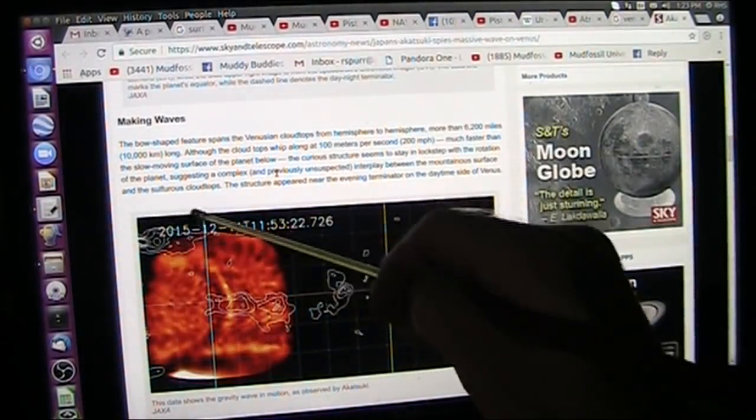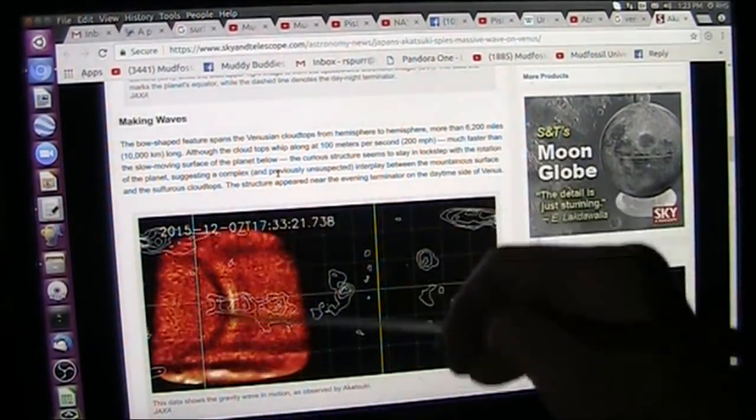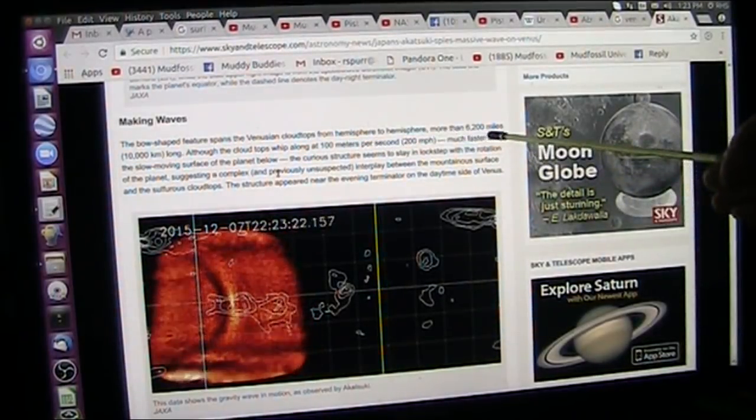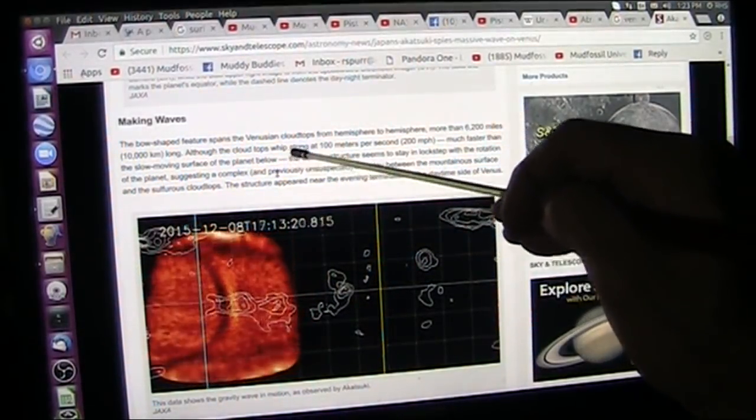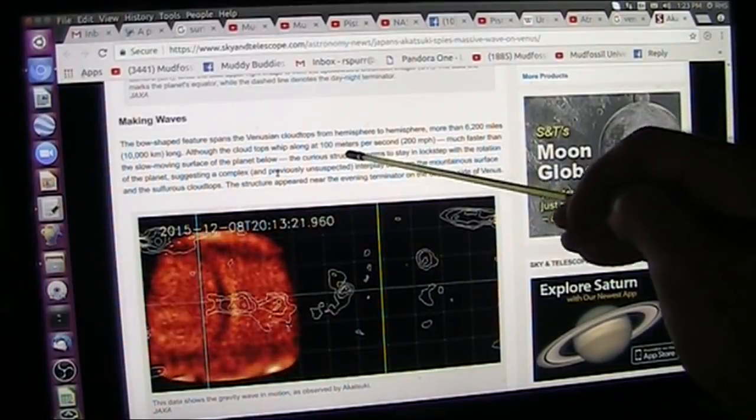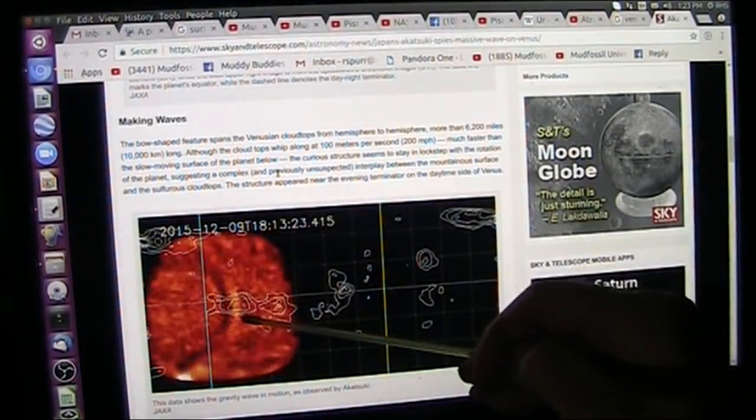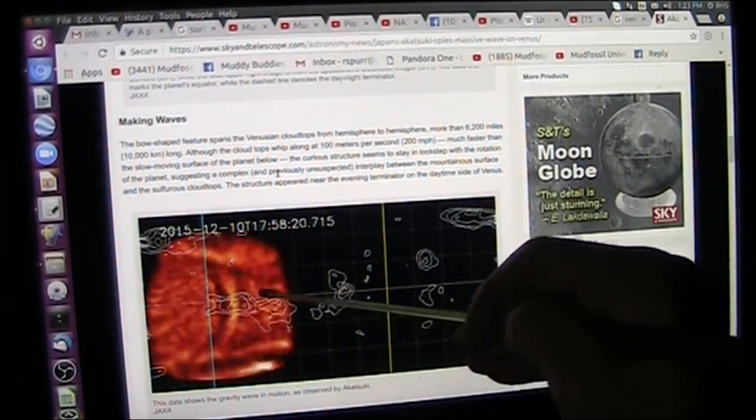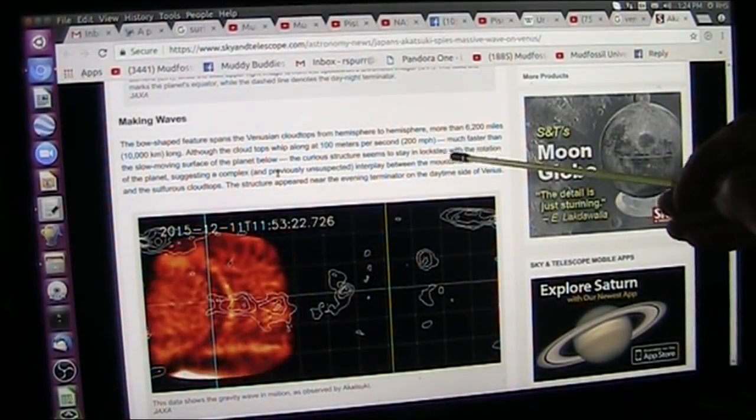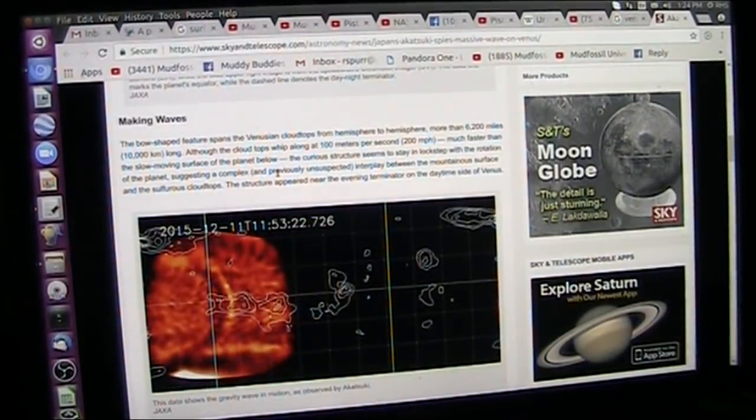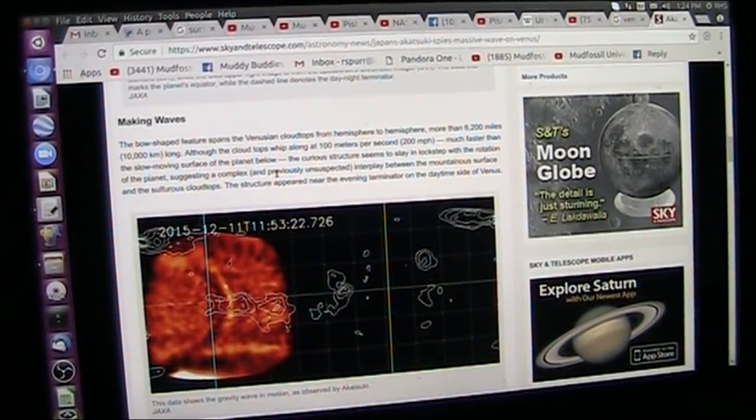The bow-shaped feature spans the Venusian cloud tops from hemisphere to atmosphere, right across the whole planet, more than 6,200 miles long this wave. Although the cloud tops whip along at 100 meters a second, 200 miles an hour, much faster than the slow-moving surface of the planet below. The curious structure seems to stay in lockstep with the rotation of the planet, suggesting a complex, previously unsuspected interplay between the mountainous surface and the sulfurous cloud tops.